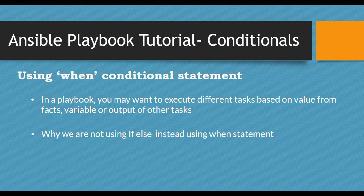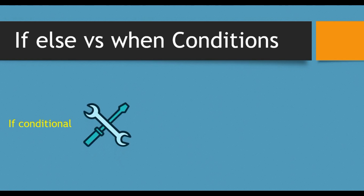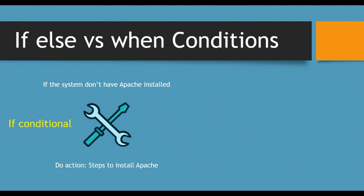We'll also look at different scenarios — using 'when' with facts, variables, or rules. Why is 'if/else' not used and why is 'when' used instead? In a simple 'if' condition scenario, consider a system where you want to install Apache. The condition would be: if Apache is not installed on the system, take the action to install it. That's how a normal 'if' condition works.